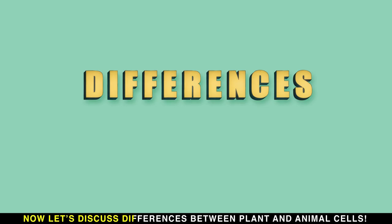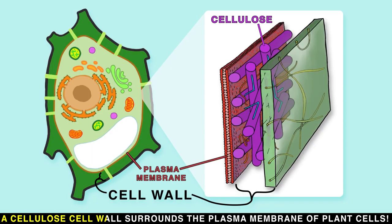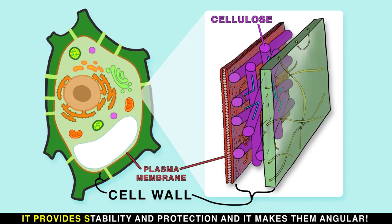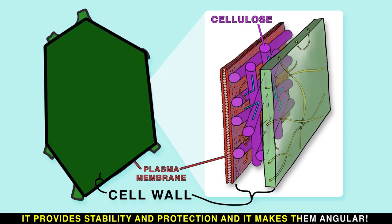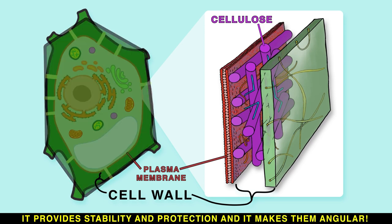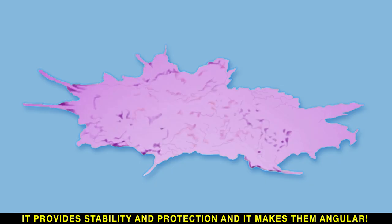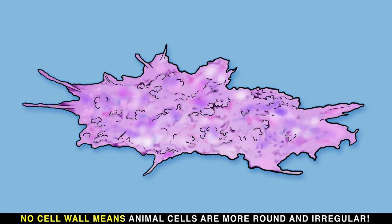Now let's discuss differences between plant and animal cells. A cellulose cell wall surrounds the plasma membrane of plant cells — it provides stability and protection and it makes them angular. No cell wall means animal cells are more round and irregular.